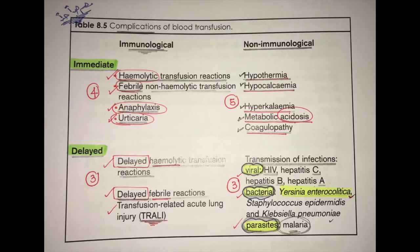Complications of blood transfusion, if you are discussing anemia, is a must. It is one of the most important topics in the exam — you have no excuse to hesitate on this answer. Use a table divided into four squares: immediate vs. delayed, and immune vs. non-immune.